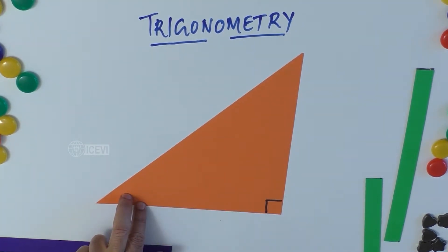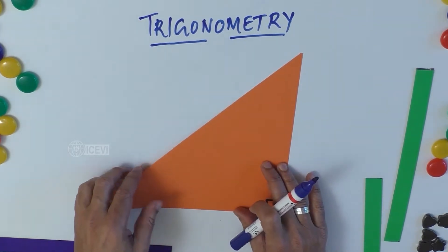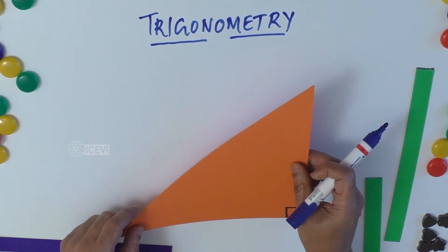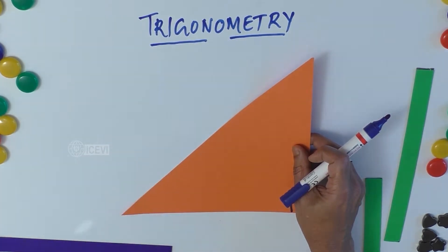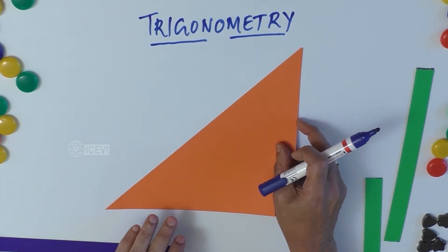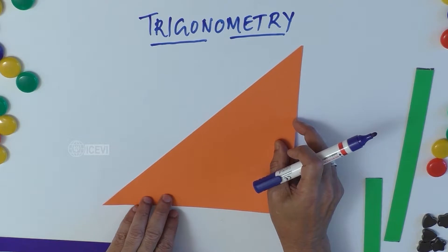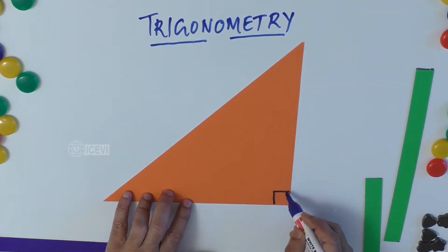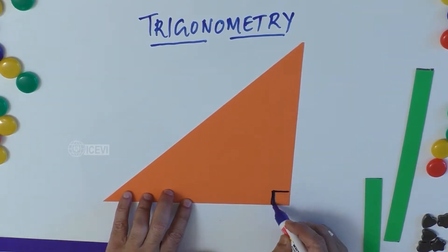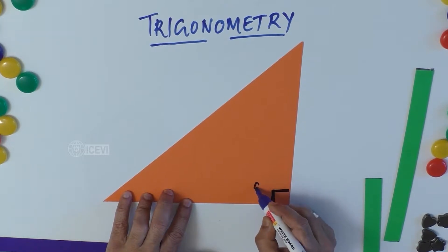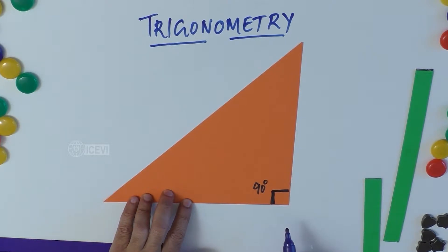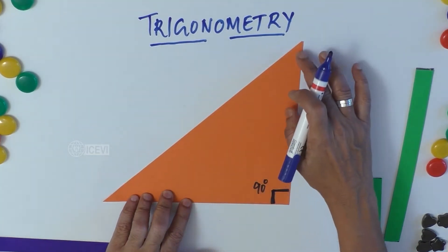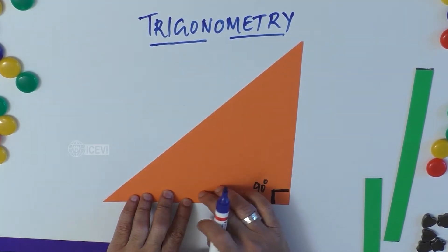Trigonometry is nothing but the relationship between the three sides of a triangle and the angles involved. Though trigonometry deals with triangles in general, the special triangle of significance is the right angle triangle, where one of the angles must be 90 degrees.